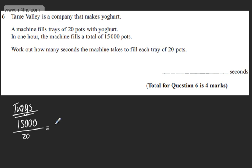We can use a calculator or alternatively, if you know that, that is going to give us 750 trays. So that's the number of trays.